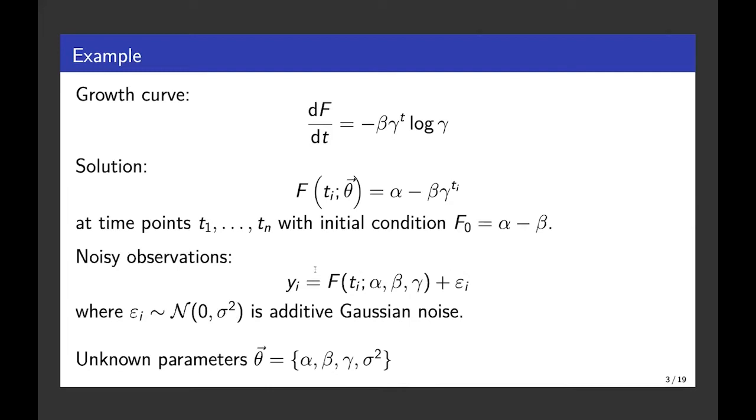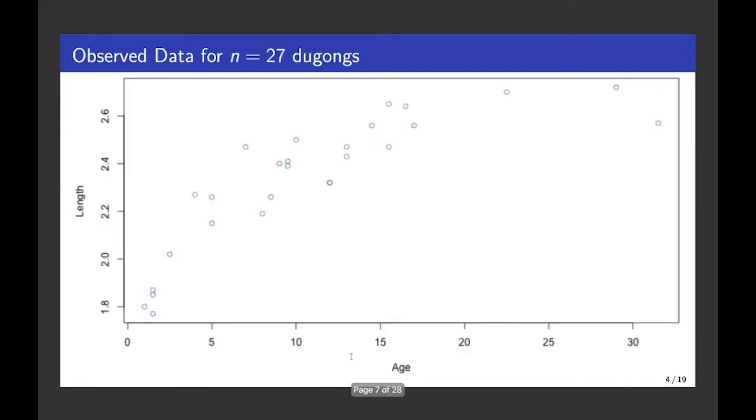And we have observations to go along with that. We're going to assume a normal distribution, so that we have additive Gaussian noise. And the unknown parameters in this case that we're trying to learn include the parameter associated with our initial value and the parameter that's associated with our noise. So it isn't just the parameters of our equation that we're learning, it can be other things as well like tuning parameters. This is the observed data - it's measurements of the length of some dugongs and then the age of those animals.